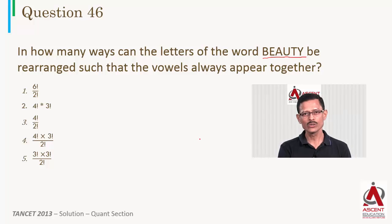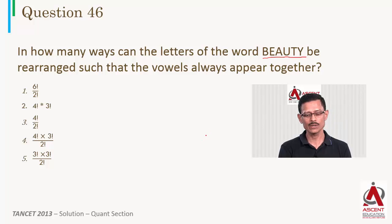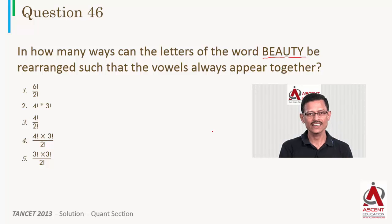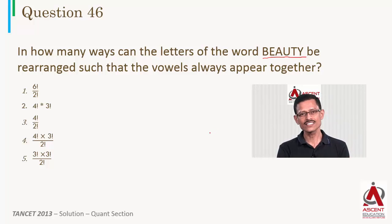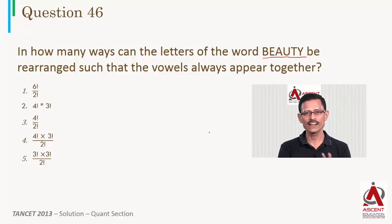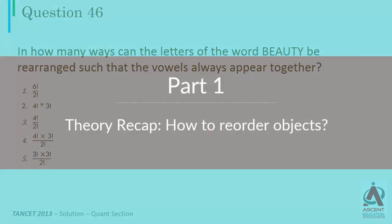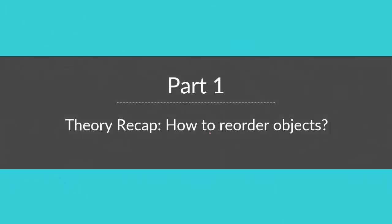What I am going to do is break solving this question into two parts. First, I am going to focus a little bit on the theory — how many ways can things be reordered. That theory can then be applied subsequently to this question to find the answer. Part one is basically a theory recap. We will quickly run through, take a simple example, build the basis, and arrive at a formula.